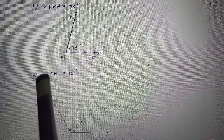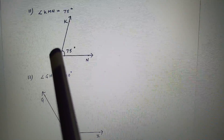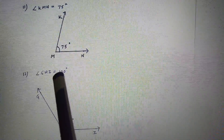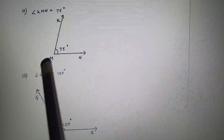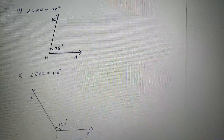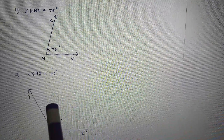Eleventh is angle KMN equal to 75 degrees. Here the vertex is M. So draw ray MN, keep the protractor on point M, mark the 75 degree point, join points M and K. You will get angle GHI equal to 120 degrees.